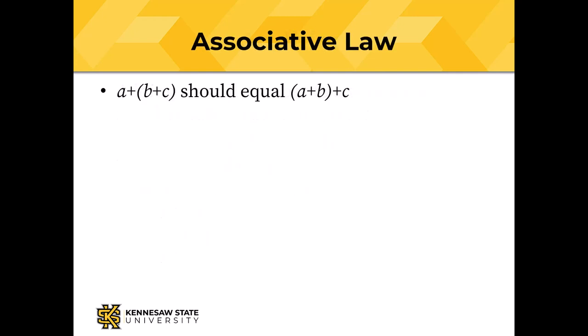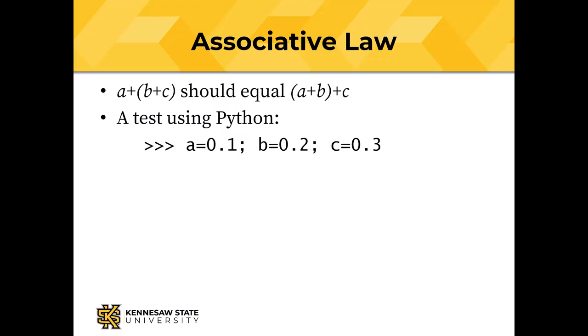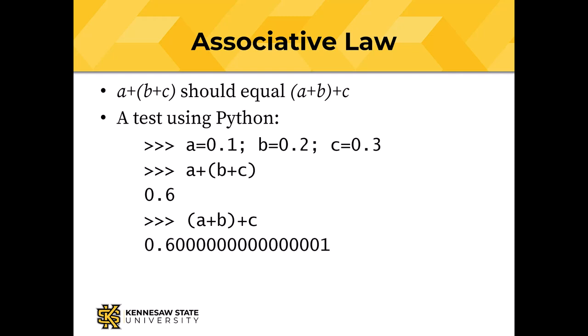Because floating point numbers are approximate, the associative law does not hold. You learned, probably in eighth grade, that A plus (B plus C) should equal (A plus B) plus C. Let's test that using Python. Setting A equals 0.1, B equals 0.2, C equals 0.3: computing A plus (B plus C) gives 0.6, which makes sense. Then computing (A plus B) plus C gives 0.6 followed by a string of zeros and a one. The two results are not equal.